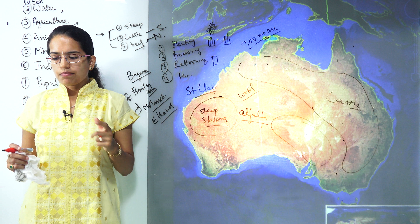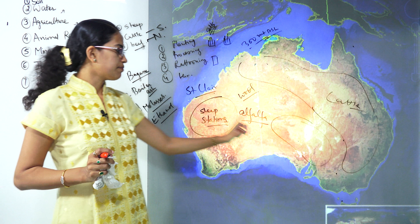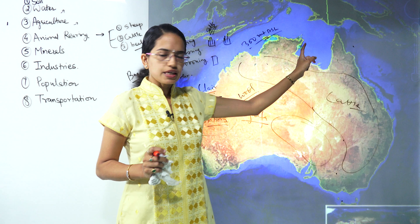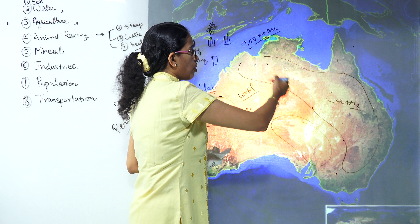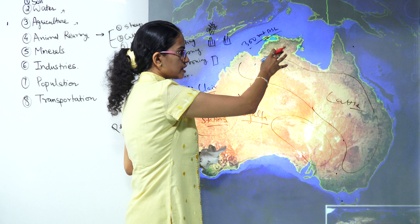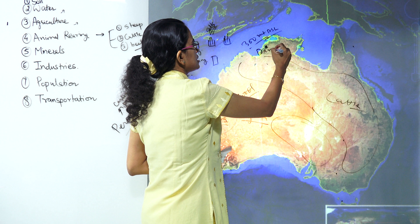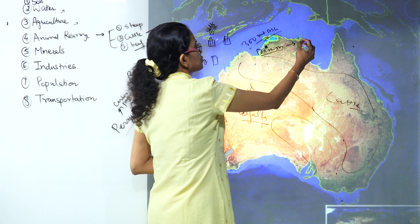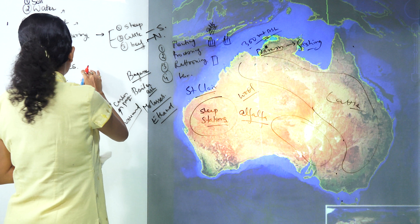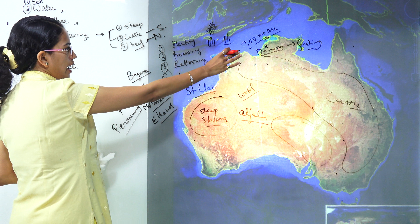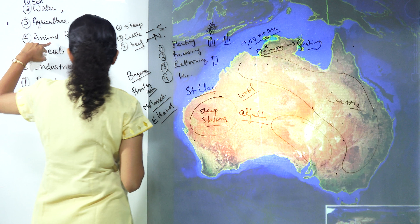The next important thing is the regions of cattle that we have already marked. So sheep, cattle and beef are the three important things. Besides that, in the regions of the Northern Territory you have Darwin, and Darwin is considered one of the major ports for fishing. Under animal rearing or aquaculture, Darwin port is important. With this we cover the fourth point - animal rearing.